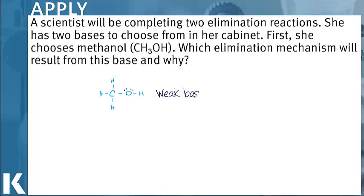Because this is a weak base, it cannot proceed through an E2 mechanism because that requires a very strong base. So when I look at this, I know that this is going to proceed through an E1 mechanism where I will make a stable carbocation intermediate. And that stable carbocation intermediate can then be attacked by the weak base, methanol.